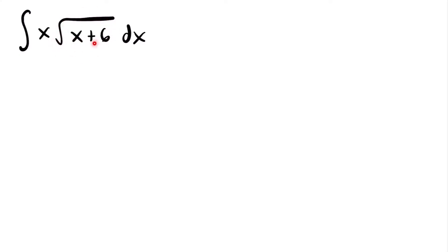That is a composite function where x plus 6 is the inside function and the square root is the outside function. In most cases, you're going to want to set that inside function of the composite function equal to u when you use u-substitution.